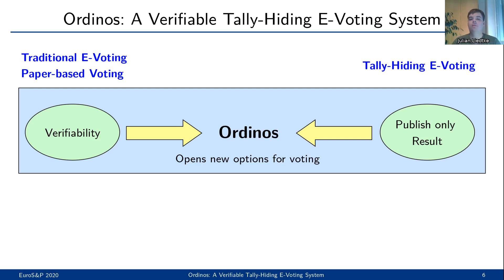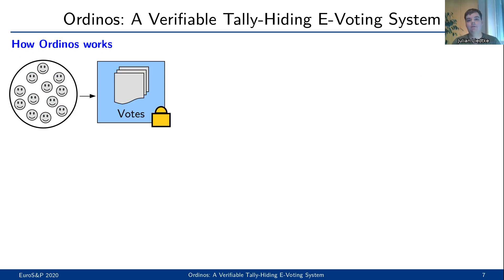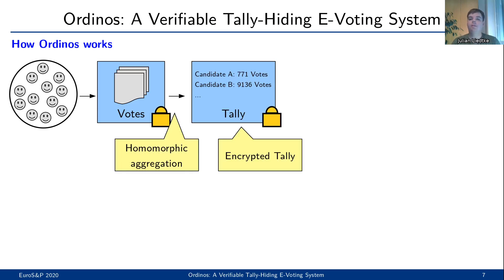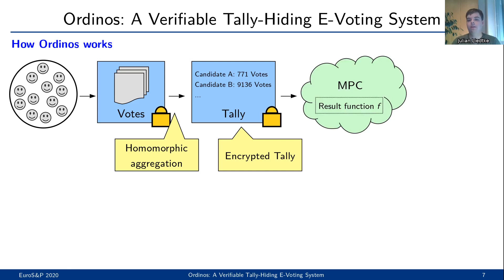Let me briefly present you the workflow of Ordinus. On a high level, Ordinus strictly extends Helios and works as follows. As usually done, the voters cast encrypted votes. Next, the votes are homomorphically aggregated in order to obtain the full tally — note that the full tally is encrypted. In traditional e-voting systems like Helios, the next step is to decrypt the full tally. Here, Ordinus starts to make things differently. Instead of revealing the full tally, the encrypted tally is sent as an input to an MPC component. This MPC component is run among the trustees of the election and computes the specific election result. Then only the result of the MPC component, namely the election result, is published.